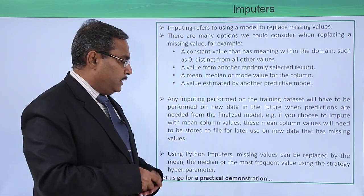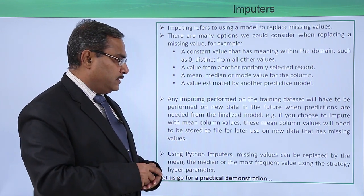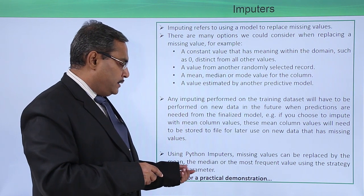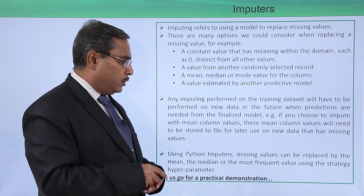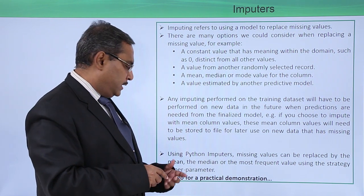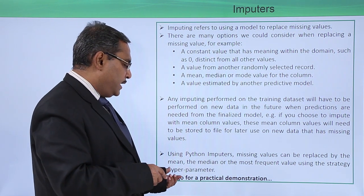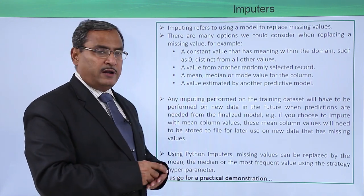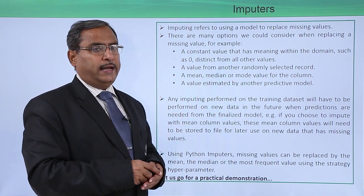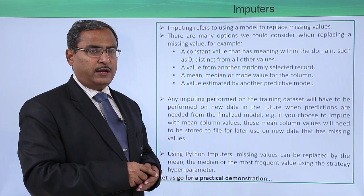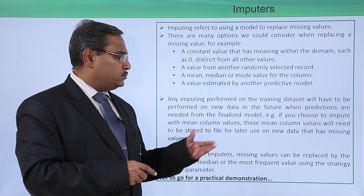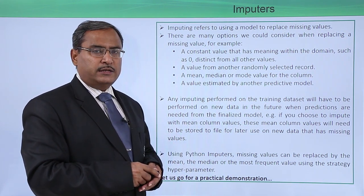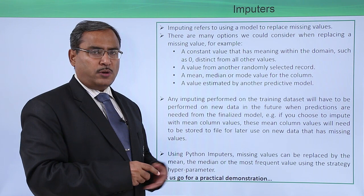Using Python imputers, missing values can be replaced by the mean, the median, or the most frequent value using the strategy hyper parameter. There are multiple different ways to deal with missing values. Let us go through a practical example for better understanding of this topic.